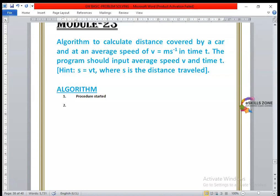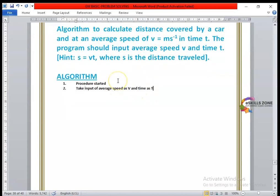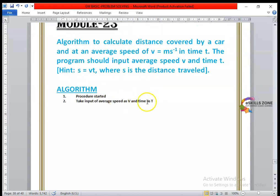The first step we will write is the procedure is started. So the starting of an algorithm, you must write it. It is very important. The second step is take input of average speed as V and time as T. So we need to take input of these two values. V is used to denote speed and T symbol is used to denote time.